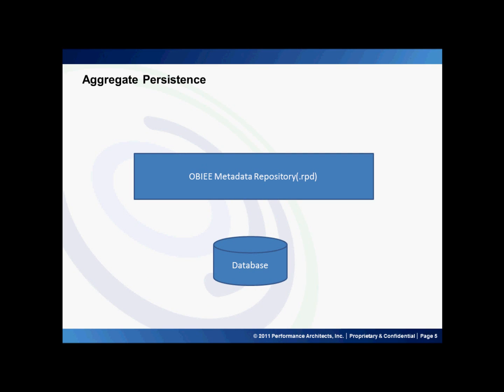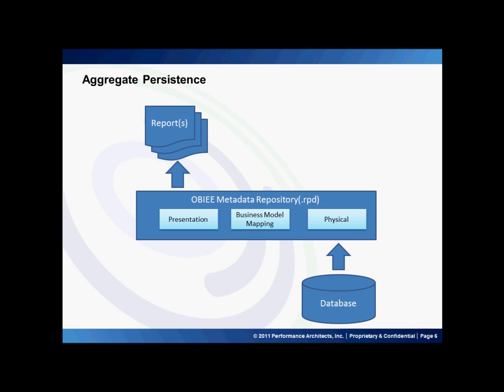There are two main aspects. First, the structures that are defined in the OBIEE repository are created by the wizard, and the structures in the underlying database are created by the wizard as well. When you run the Aggregate Persistence Wizard, it will create a script. That script is then run separately from a DOS command line, which will create all the structures necessary in the database and in the OBIEE RPD. When you run subsequent reports, these structures will be leveraged instead of the detail tables and detail structures in the OBIEE repository.